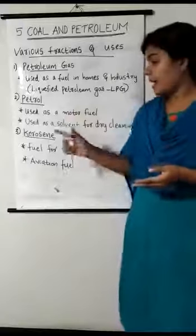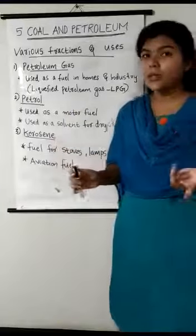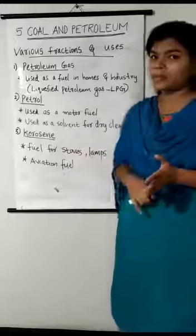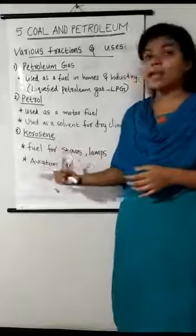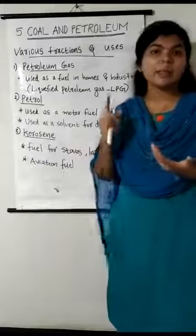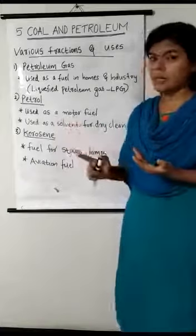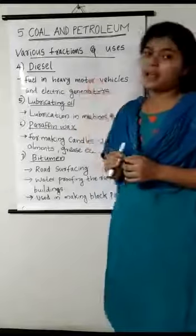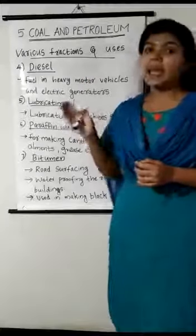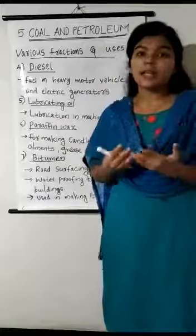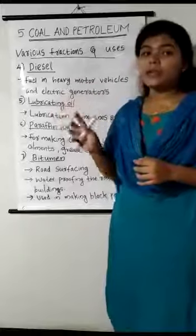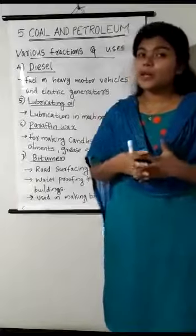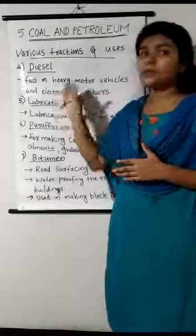Third, kerosene — it is used as a fuel for stoves to cook food and in lamps for lighting purposes. Kerosene is also used as aviation fuel — the fuel used in aircraft. Fourth, diesel — it is used in heavy motor vehicles such as buses, trucks, and tractors, and also as a fuel in electric generators that provide electricity during power cuts.